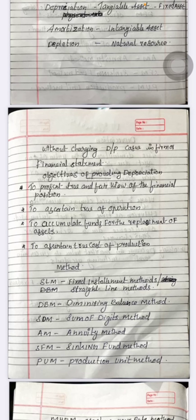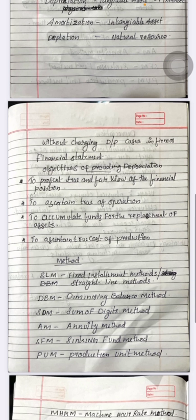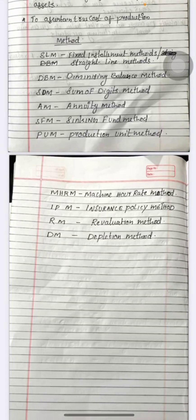The next topic is the methods used to charge depreciation. The methods are: 1. Straight Line Method (SLM) or Fixed Installment Method; 2. Diminishing Balance Method; 3. Sum of Digits Method; 4. Annuity Method; 5. Sinking Fund Method; 6. Production Unit Method; 7. Machine Hour Rate Method; 8. Insurance Policy Method; 9. Revaluation Method; 10. Depletion Method.